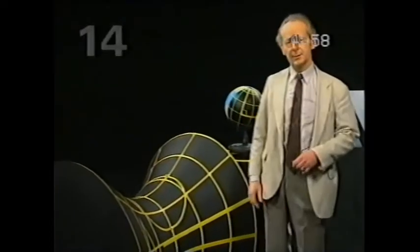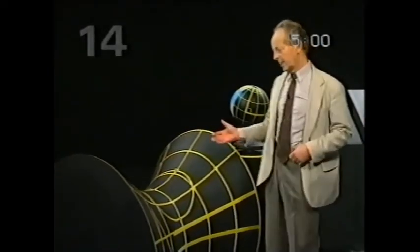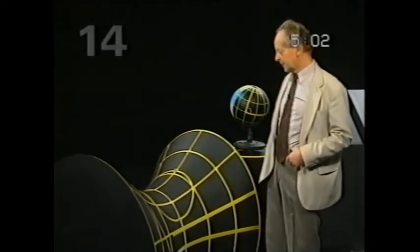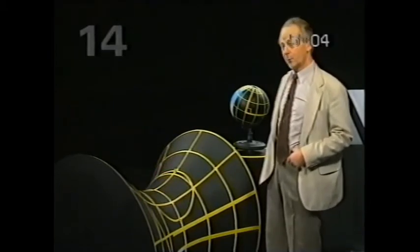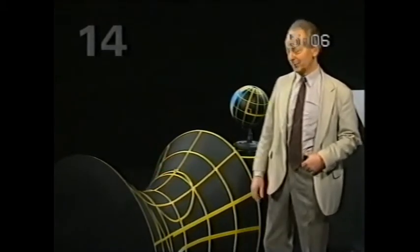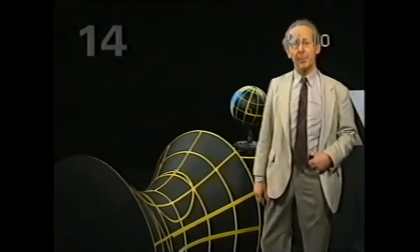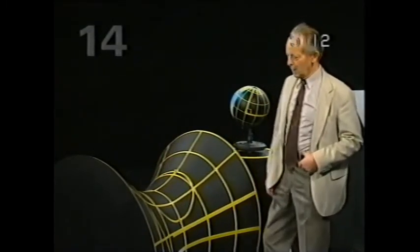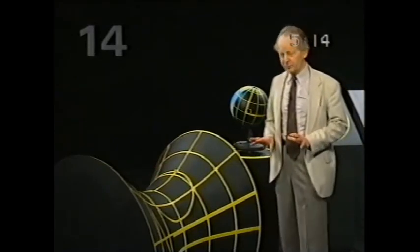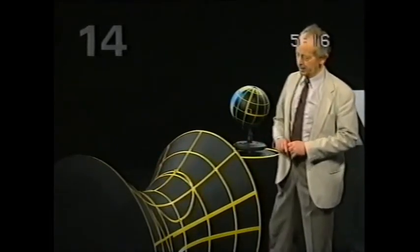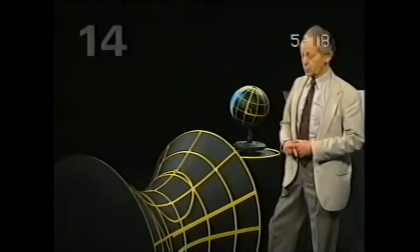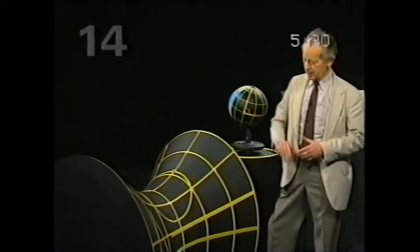But even that doesn't exhaust the possibilities. Suppose, for example, we had a surface like this. The kind that a horse flea, perhaps, would have to learn how to negotiate. A saddle shape, or as we sometimes call it, a hyperbolic shape. Again, the first thing we have to do is to identify straight lines. And again, we use the convention that it's the shortest distance between two points. So that gives us some straight lines.